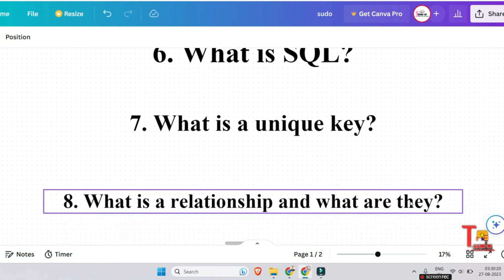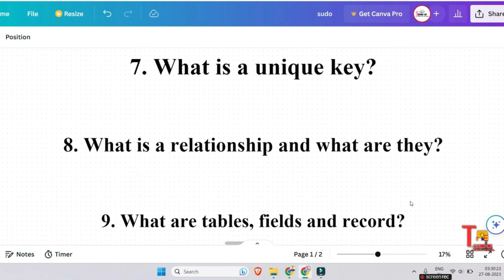The next question is what is the relationship and what are they? Relationship is the interconnection of tables within the database. You have already gone through that, I think in the fifth semester or sixth semester. Various types of relationships are one to one relationship, one to many relationship, many to one relationship, and self-referencing relationship.